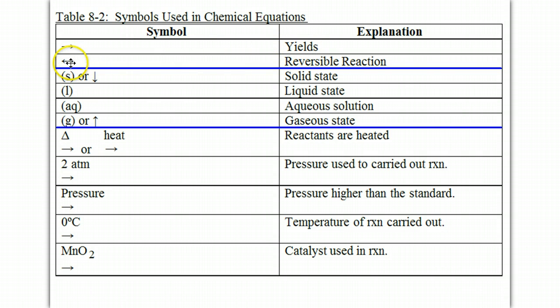If you have a two-sided arrow, this indicates you have a reversible reaction. If you ever have solid, liquid, gas, or AQ for aqueous placed after the substance, that describes what phase the substance is in.